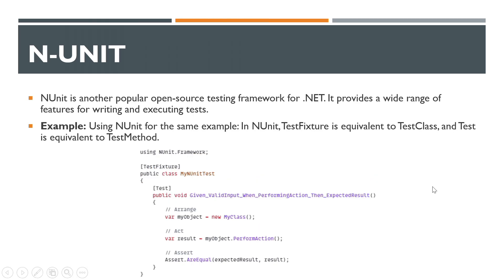NUnit is another popular open source testing framework for .NET, providing a wide range of features for writing and executing tests. In NUnit, TestFixture is equivalent to TestClass and Test is equivalent to TestMethod in MS Test. You add the NUnit.Framework namespace, use the TestFixture attribute on the class, and the Test attribute on each test method. We follow the same Given-When-Then and Arrange-Act-Assert patterns.